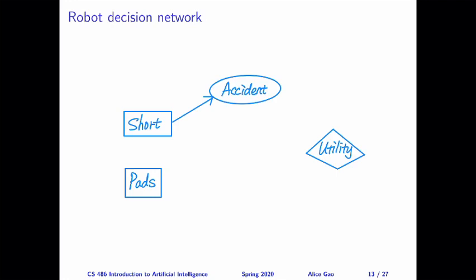So in this case, we have two cases, the probability of accident given that we go on the short route, and the probability of accident given that we go on the long route. Now, for the long route is easy, because an accident will never occur on the long route, the probability is zero. For the short route, there is a fixed probability for an accident to occur. And we don't know what this number is.